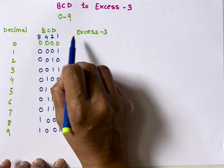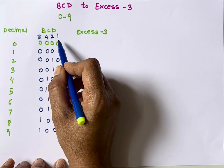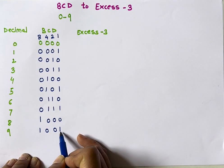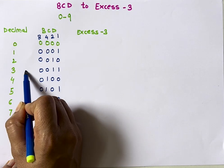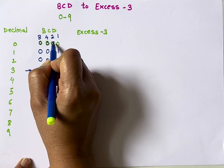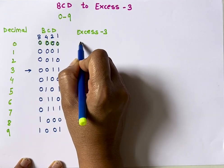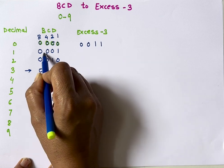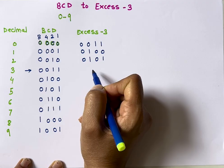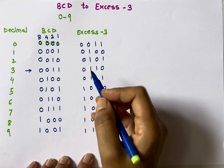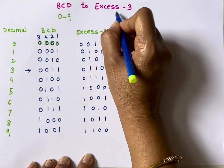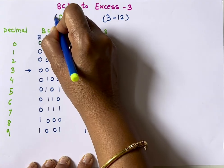BCD is a weighted code — for every bit position some weight is associated, whereas XS3 is not a weighted code. XS3 equivalent of any number is that number plus 3. So XS3 of 0 is 3 (0011), 1 is 4 (0100), 2 is 5 (0101), and so on. BCD numbers range from 0 to 9, while XS3 numbers range from 3 to 12.